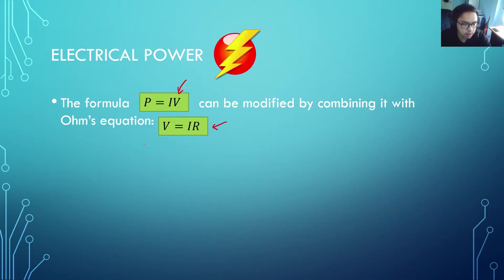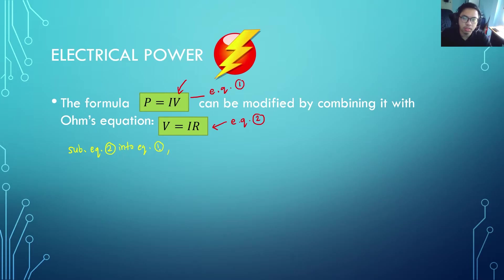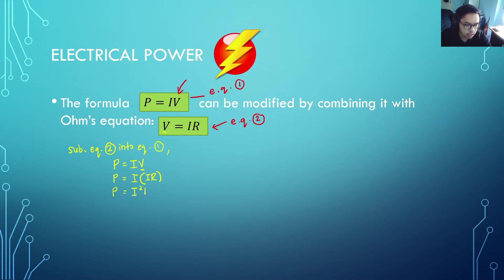We take equation 1 as P equals IV and equation 2 as V equals IR, then substitute equation 2 into equation 1. This is the substitution method you've likely seen in additional maths. Substituting V equals IR into P equals IV, the V becomes IR, and expanding the brackets gives us the new formula: power equals current squared times R, or P equals I²R.